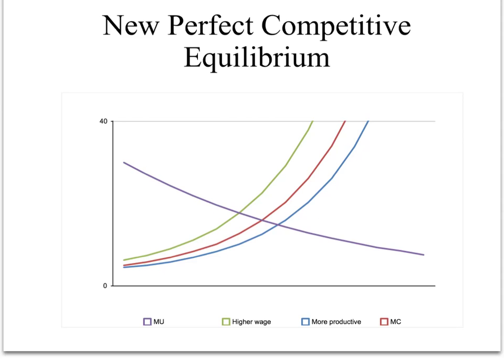Given the fixed demand curve: higher wages mean higher prices and fewer croissants made. Higher productivity means lower prices and more croissants made. Straightforward and simple once you take it one step at a time. Thank you.